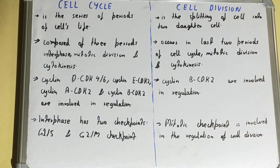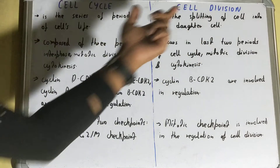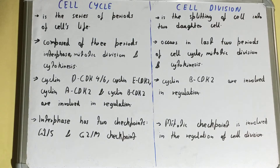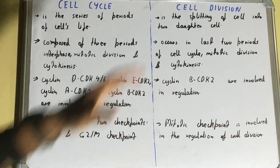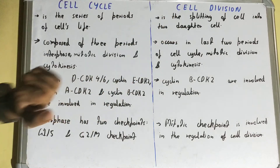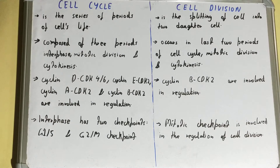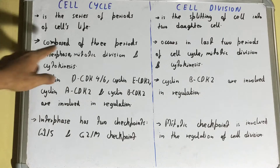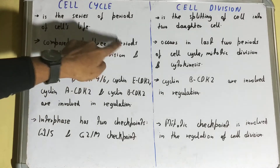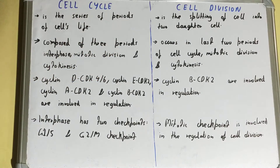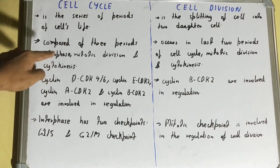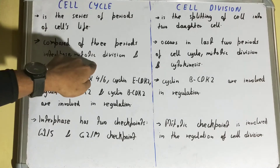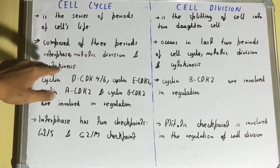But if we talk about cell division, it is the splitting of a cell into two daughter cells. So when the cell divides to form two daughter cells, that is called cell division. Next, the cell cycle is composed of three periods or three stages: first is interphase, second is mitotic division, and third is cytokinesis.